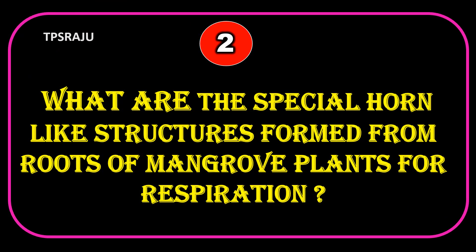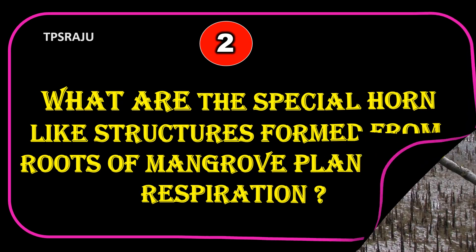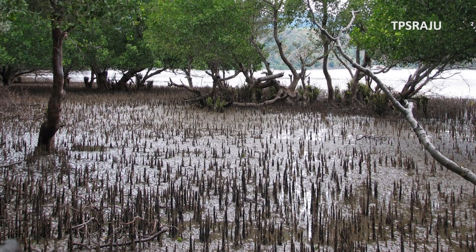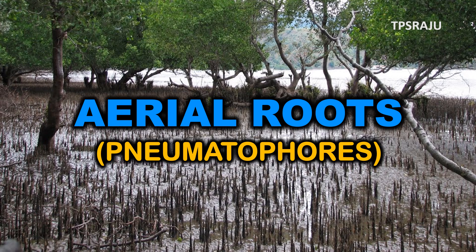What are the special horn-like structures formed from the roots of mangrove plants for respiration? Aerial roots are pneumatophores.